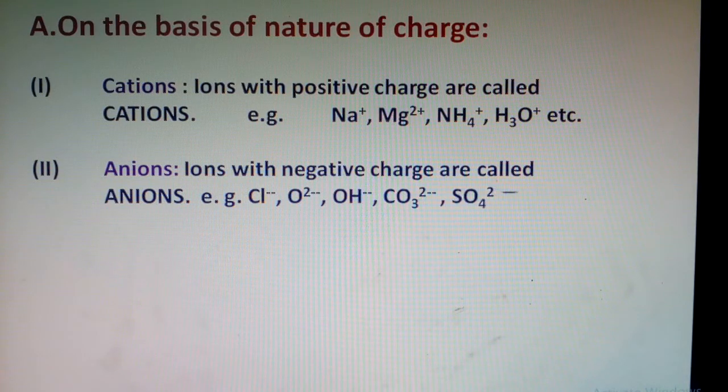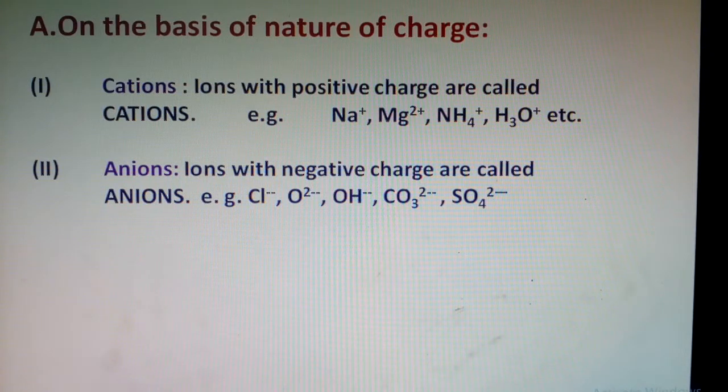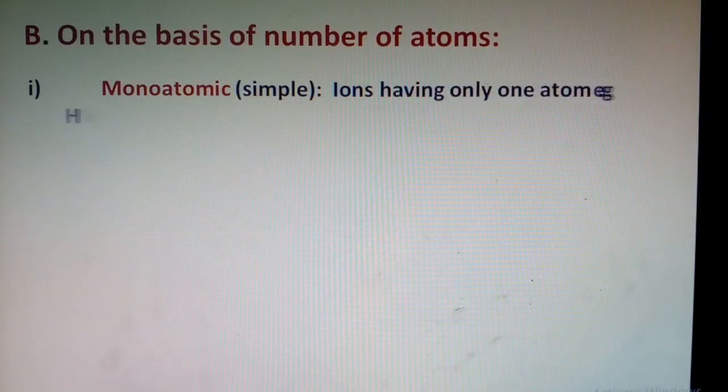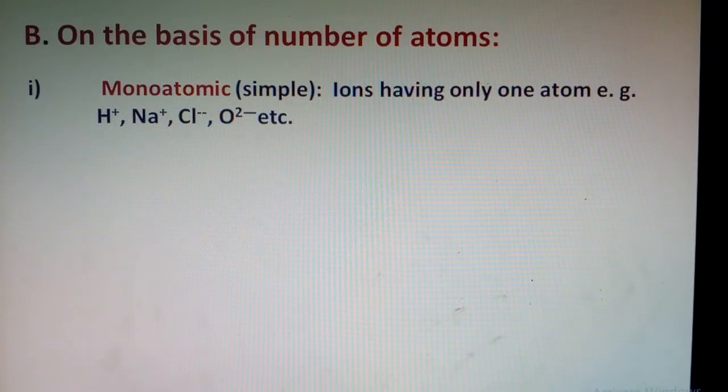Second is on the basis of number of atoms. We have simple ions, also called monoatomic ions, and complex ions, which are further divided into different types. Monoatomic or simple ions are those in which there is only one atom, either metal or non-metal, bearing a positive or negative charge. For example: hydrogen ion, sodium ion, chloride ion, oxide ion, etc.